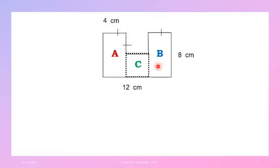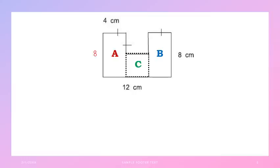There are sides, children, with no measurement written, like this left side of rectangle A — no measurement is shown. But on the opposite side, 8 cm is written. Since opposite sides are equal, this side is also 8 cm. So, write 8 cm there so you won't get confused. We got that 8 cm from the opposite side, because they are the same length.